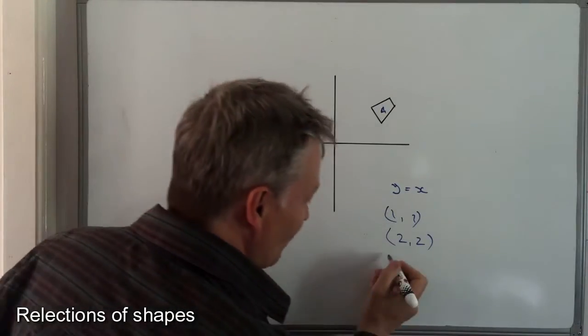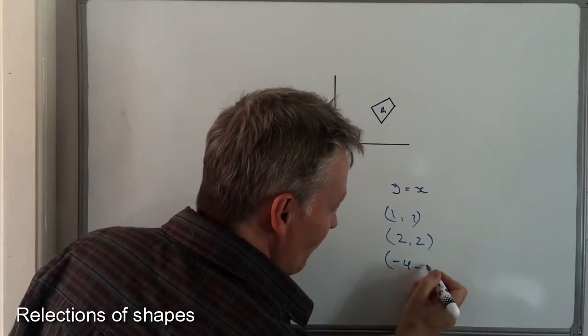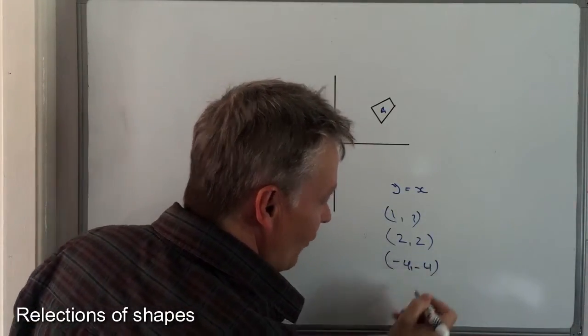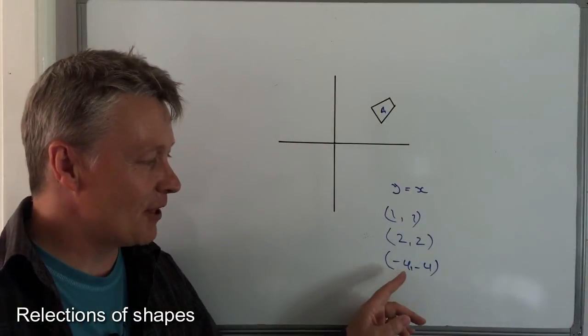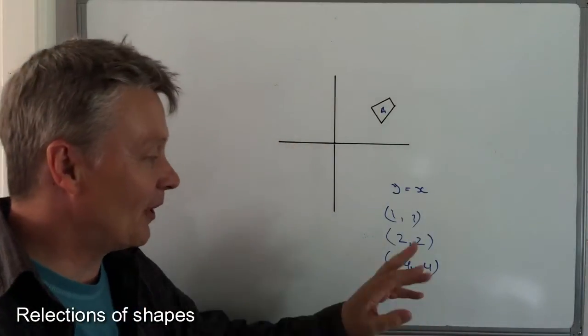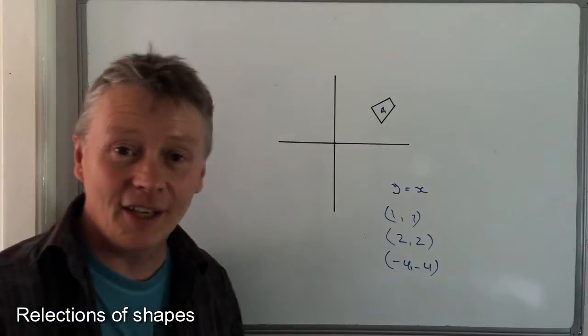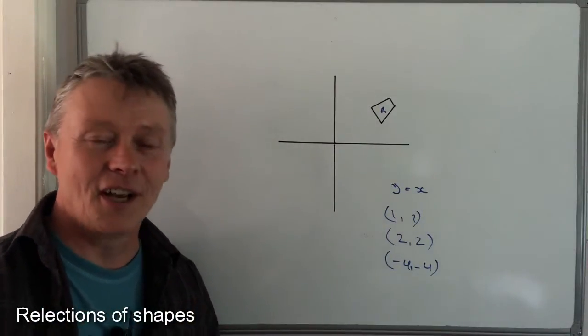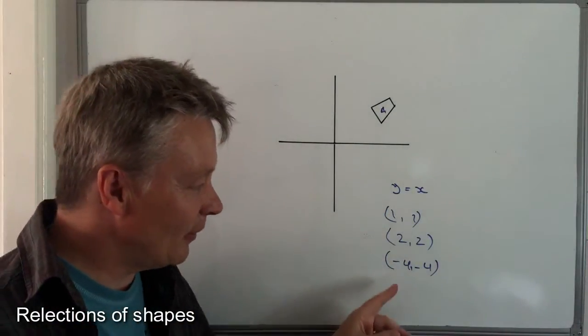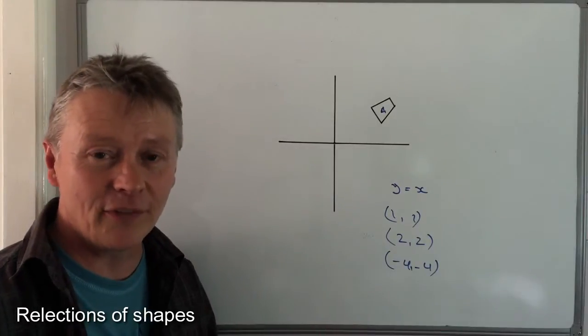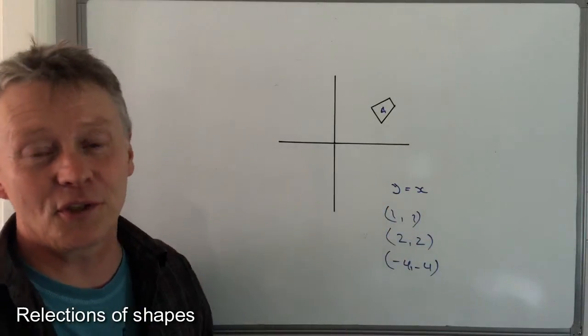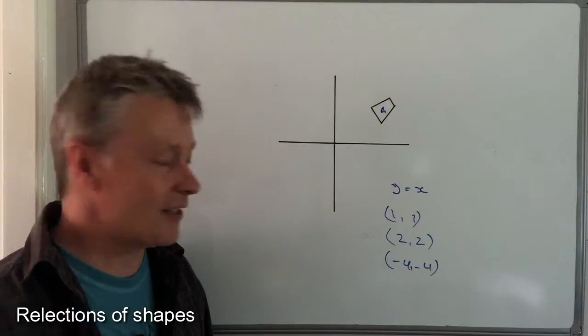Or I can have (-4,-4): x equals -4, y equals -4. Now, like I did in the previous video, if I just plot those points, it will allow me to create this mirror line, which is y equals x.